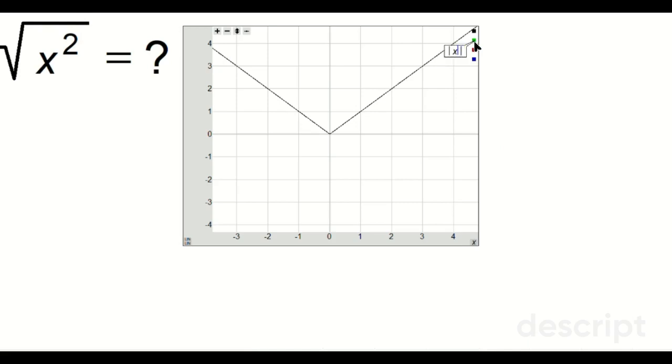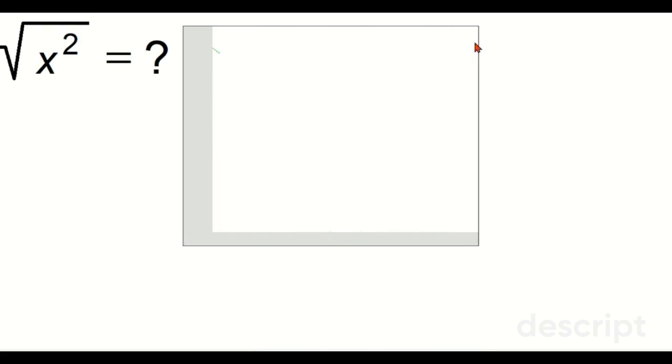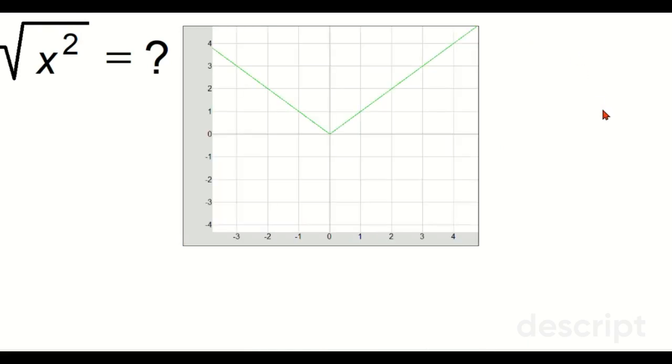How do I know that? So now I'm going to graph the absolute value of x right there. Look at it. And you see how these two graphs overlap perfectly? So that's not accidental.